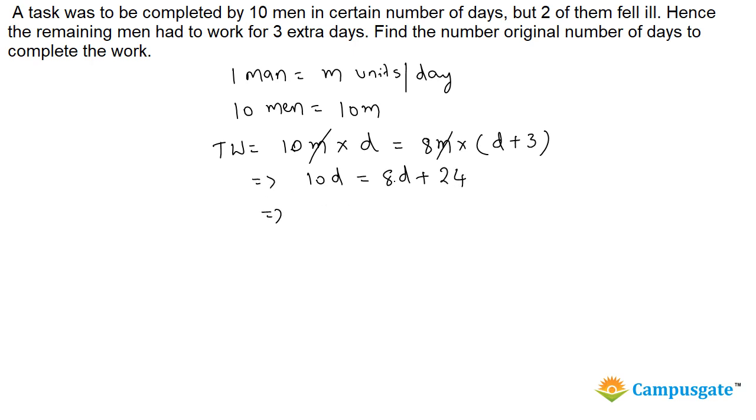You just bring this 8d to this side, therefore 2d equals 24, therefore d equals 12. So originally they planned to complete the job in 12 days.